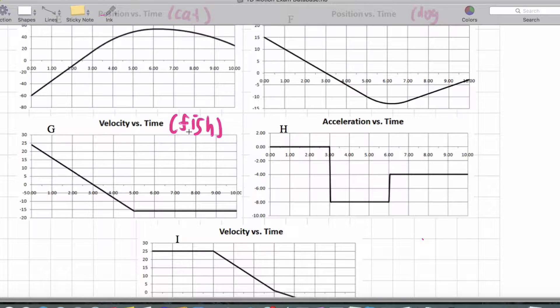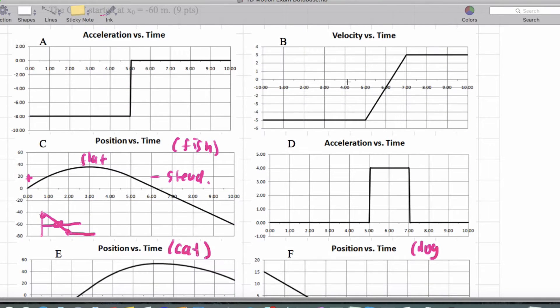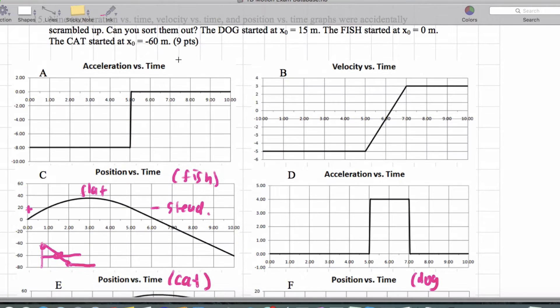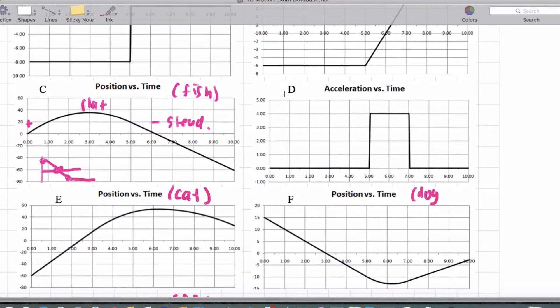Alright, now to get the acceleration graph of the fish, we're gonna need a negative steady acceleration and then a flat part. So the acceleration graph for the fish is gonna just look like this and then level off to zero, which is clearly graph A. So we've covered the fish.